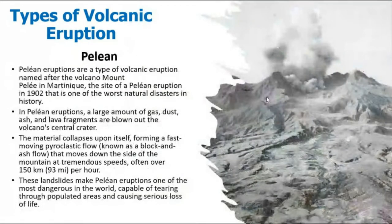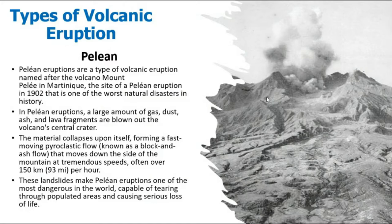The fourth type is Pelean, named after Mount Pelée in Martinique in 1902. A large amount of dust, smoke, ash, and lava fragments are blown out of the central volcanic pipe. The material collapses upon itself, forming a fast-moving pyroclastic flow, known as a block and ash flow. The magma comes out, gets solidified, and builds blocks around the central pipe. When this pyroclastic flow happens, it creates landslides, making Pelean eruptions one of the most dangerous in the world, capable of tearing through populated areas and causing serious loss of life.